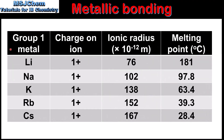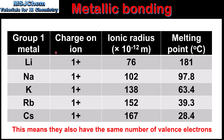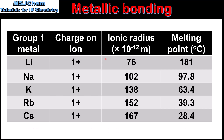In this table we have data for the group 1 metals. Because they're all located in group 1 of the periodic table they all have a 1+ charge, so the charge on the ion is the same for all metals. However, if we look at the data for the ionic radius we can see that it increases down the group, with lithium having the smallest ionic radius and cesium having the largest. If we look at the melting points, lithium has the highest and cesium has the lowest. So lithium has the highest melting point because it has the smallest ionic radius, and cesium has the lowest melting point because it has the largest ionic radius. To summarize: the smaller the ionic radius, the stronger the metallic bond and the higher the melting point.